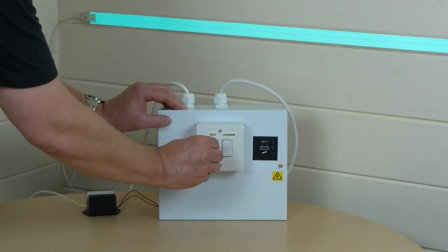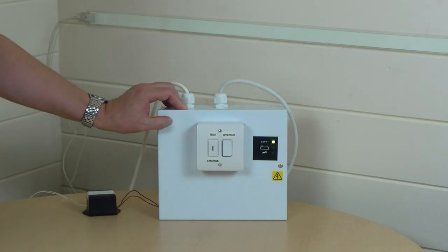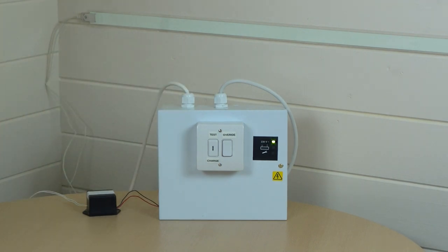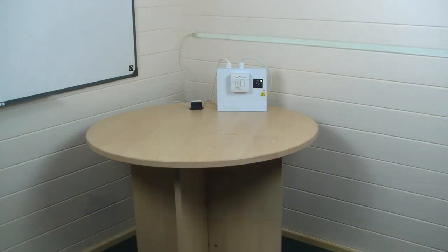We'll put that back to reset and now we can do a simulated mains failure. As you can see, we've zoomed out a little to allow us to see more of the actual room, and when I unplug the mains the Light tape comes on immediately.